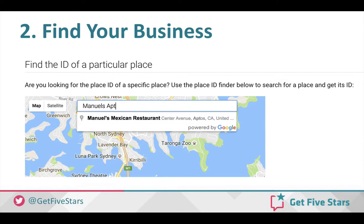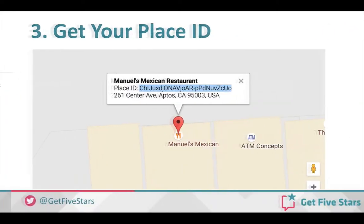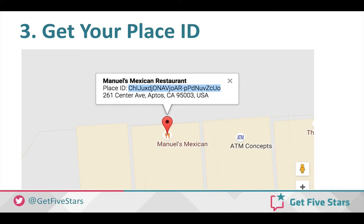Once you select that business, it's going to take you to a little map with a pin and a little box that pops up from the pin, and in that box there's something called a place ID. It's the middle line, and what you're going to want to do is copy that place ID. It's some long, kind of jumbly code, but you want to capture that because we're going to use that to build the specific URL for your business.